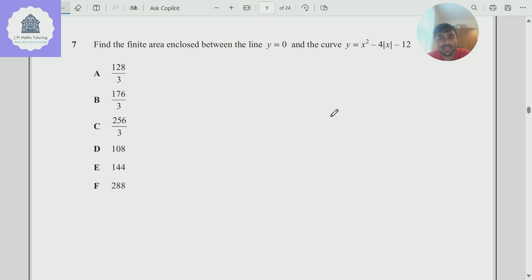Hey, I've got a problem from the TMUA. This is from paper 1, 2022. We want to find the finite area enclosed by the line y equals 0 and the curve y equals x squared minus 4 modulus x minus 12. And we've been given six options here.